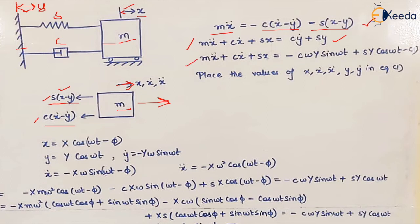We assume the base vibration is harmonic, so y = Y cos(ωt), where Y is the amplitude. Therefore y-dot = -Y ω sin(ωt). Substituting y-dot and y into the equation gives Equation 1.